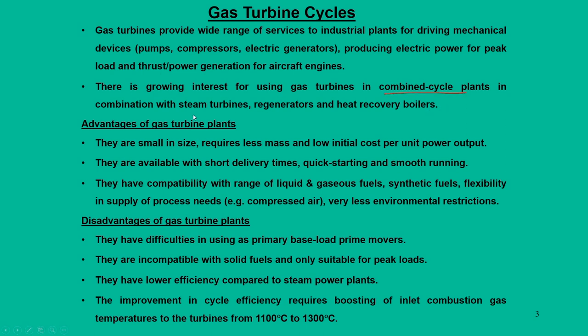Apart from that, an additional advantage of gas turbine units is that they are used in combined cycle plants — in combination with steam turbines, regenerators, and heat recovery boilers. There are various augmentation techniques where steam turbines can be combined with gas turbine technology for combined cycle power generation. Many times we also call this co-generation.